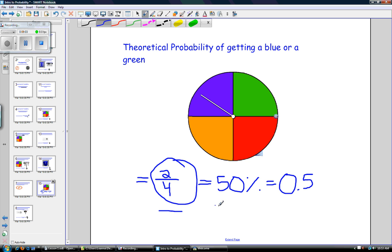And you need to be able to represent it in any of these three ways. It can also be represented as a ratio, which would be 2 to 4. And all of these ways of representing a probability are all equal. They all mean the same thing.